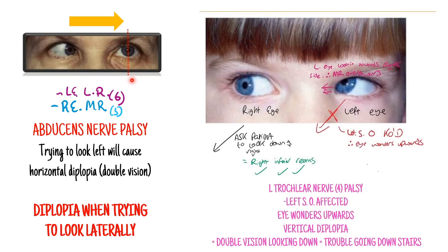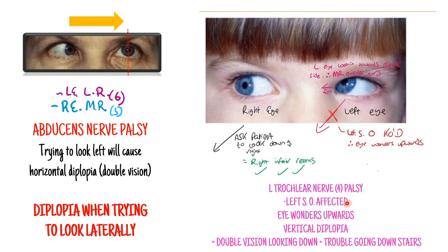This is a trochlear nerve palsy. You've asked your patient to look down and right. In the right eye it's the inferior rectus, and the left eye is the opposite - the left superior oblique. But clearly the patient's left eye is not looking downwards, so the left superior oblique is not working - the patient has a trochlear nerve palsy. The eye is still able to look inwards because the medial rectus can pull it in slightly, but it wanders upwards instead of downwards. This patient will have trouble looking down and will get double vision doing so - trouble going downstairs is a classic sign of a trochlear nerve palsy.